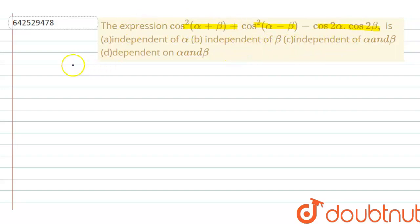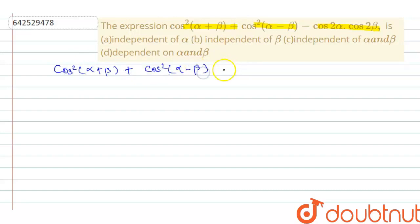We have cos²(α+β) + cos²(α-β) - cos(2α)·cos(2β).